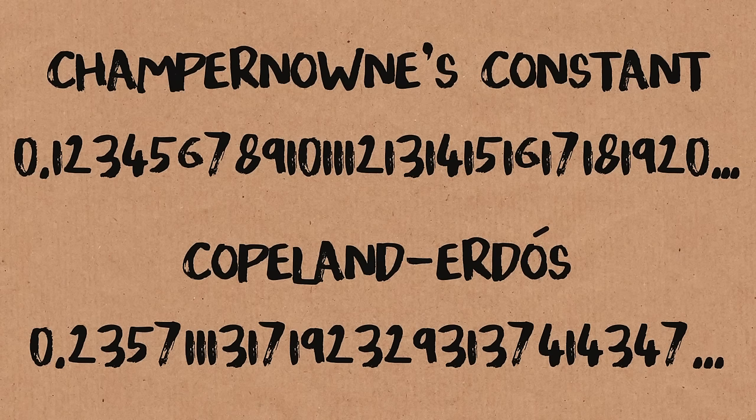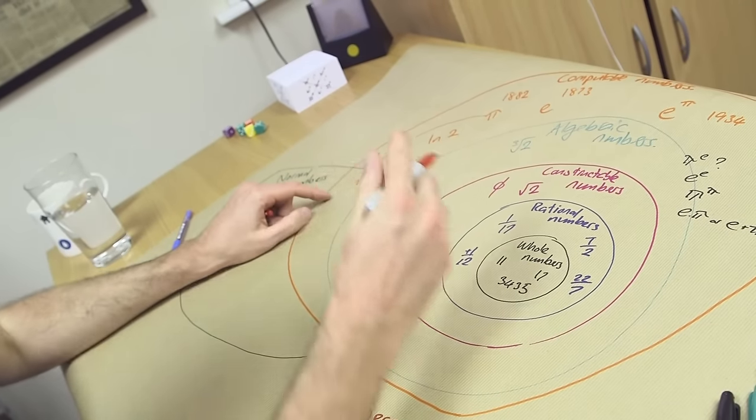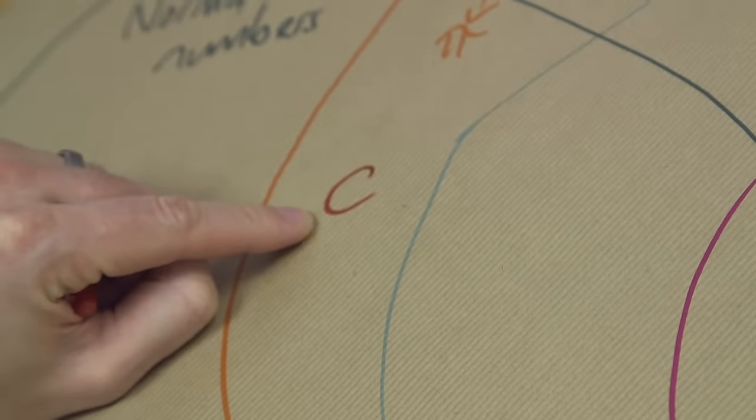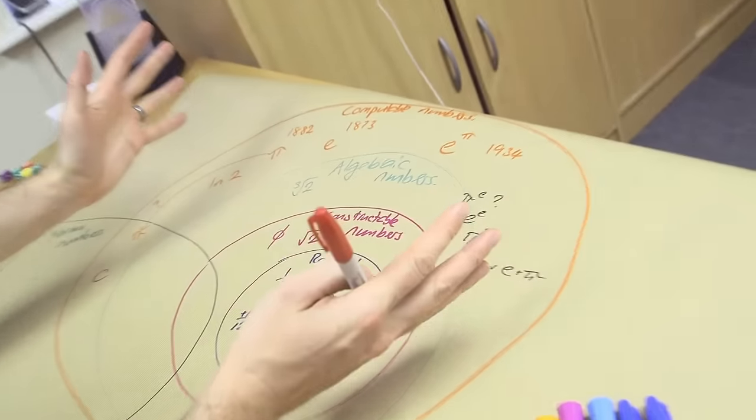So we didn't start with these numbers and go, I wonder if they're normal. These people sat down and went, I'm going to make a normal number. How can I do that? And they generated these. Now Champernowne's number is transcendental. So this is it in base 10. Obviously you can do it in different bases, and it is computable, it is normal, and it is transcendental. So transcendental means it's outside algebraic, it's there.